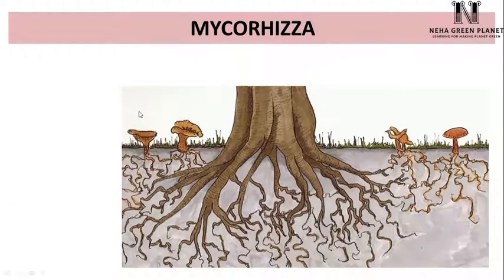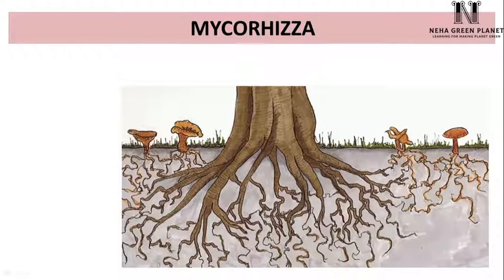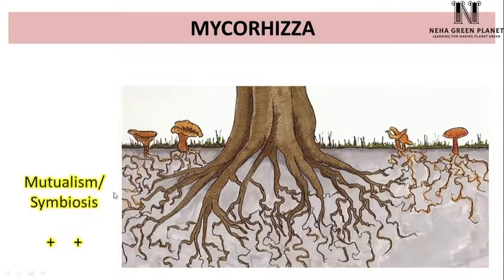Another example is the mycorrhizal association between fungus and green plants. Fungus lacks chlorophyll and derives food from the plant; in return, fungus provides water and nutrients to the plant. Both plant and fungus are benefited — it is a plus-plus relationship. We can consider it as mutualism or symbiosis.